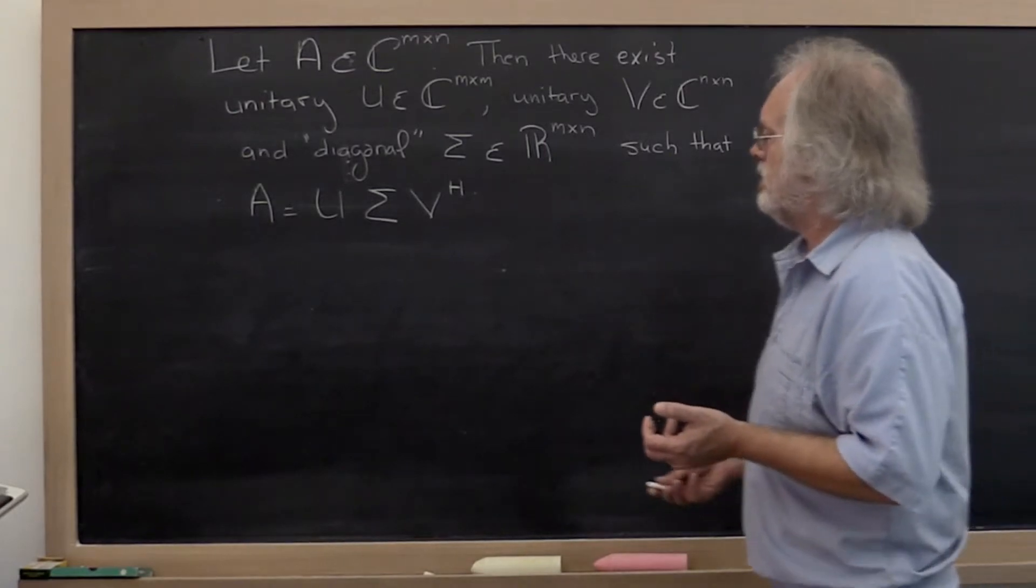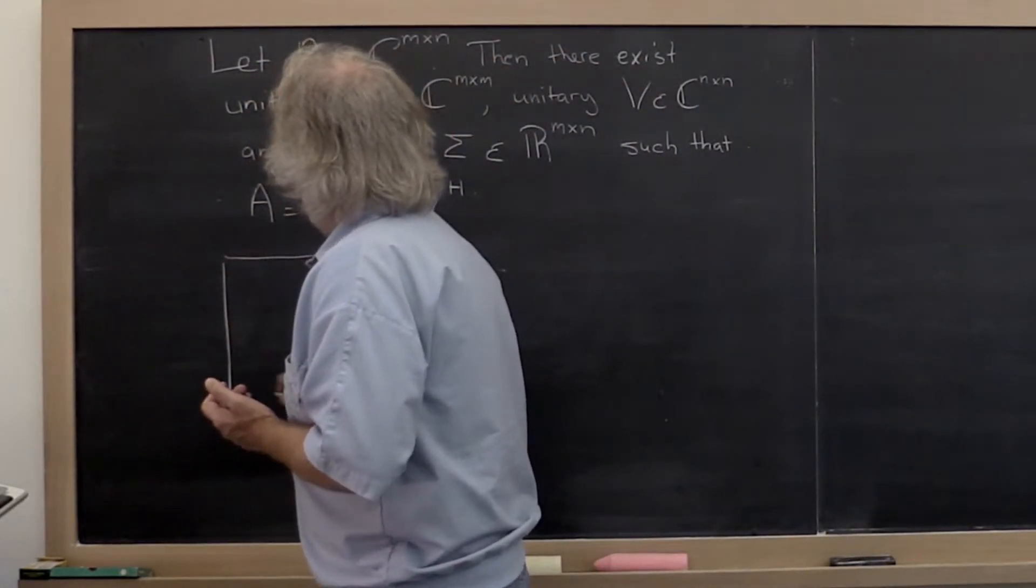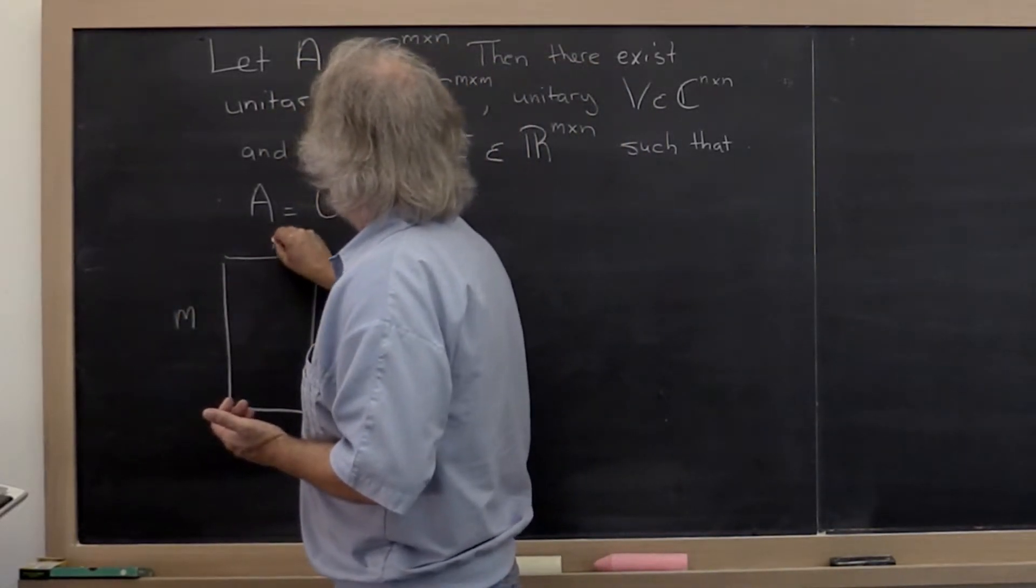So how should we actually look at this? Well, matrix A is some rectangular matrix. And for now, let's just say that M is greater than or equal to N.